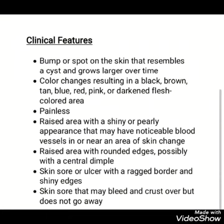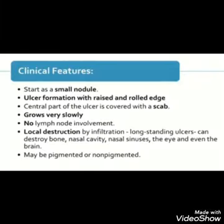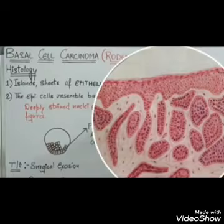Clinical features: rodent ulcers are painless. Color changes may occur — black, brown, blue, red, or pink. There is a raised area with a shiny and pearly appearance at the border edge. The center shows a dry scab. It may start as a small nodule, then progress to ulcer formation with a raised and rolled edge. It grows very slowly with no lymph node involvement, as it does not spread to regional lymph nodes, but lymphatics may be blocked by large tumor cells. It is locally malignant.